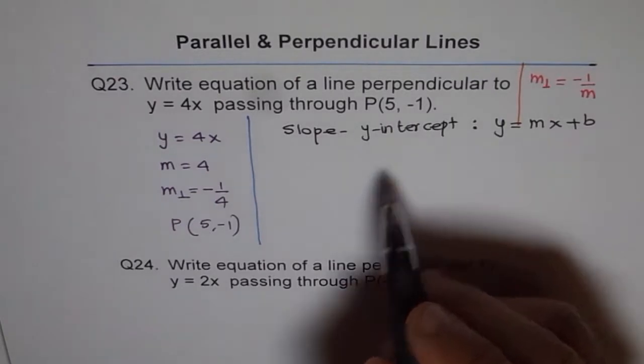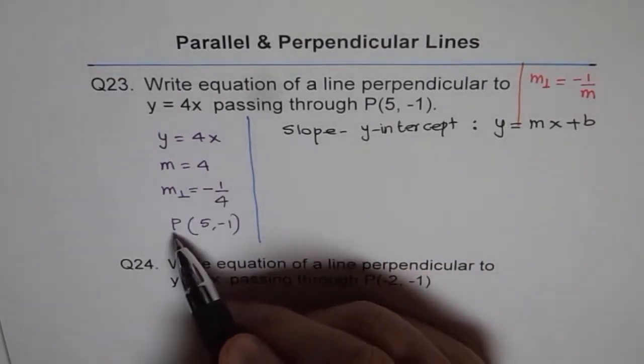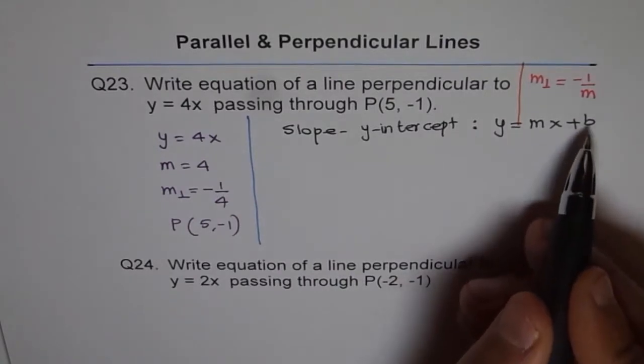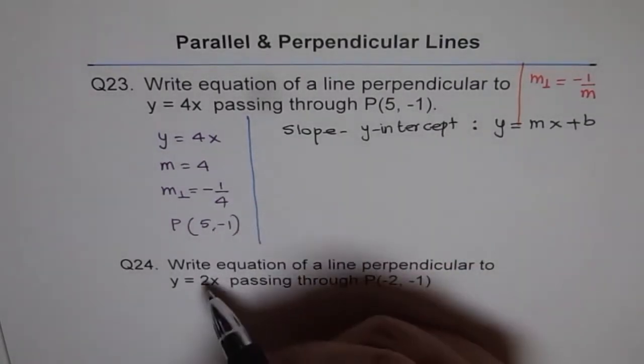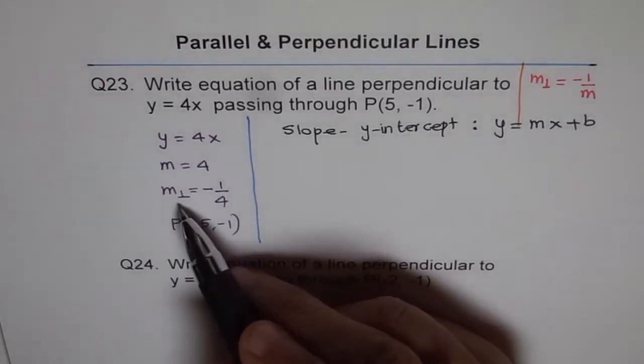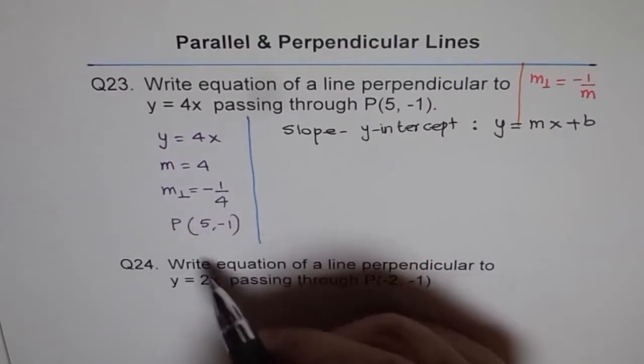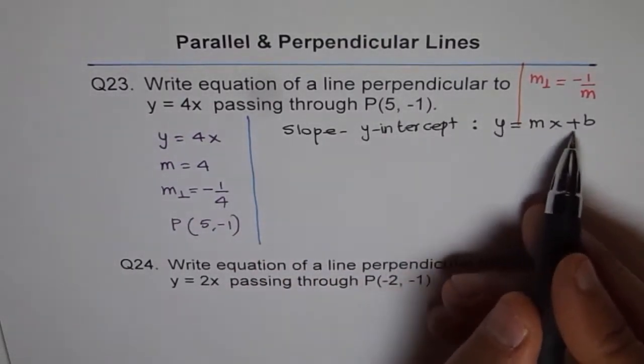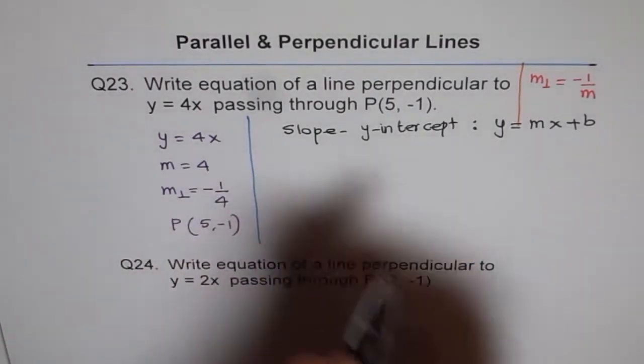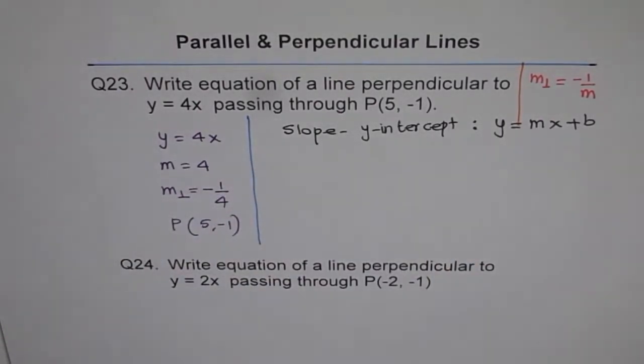Now, we know slope, we know a point, but we do not know y intercept. So the idea is to isolate and find what b is from given information. Given information is the point and the information we found, that is, perpendicular line slope should be minus 1 over 4. So we will rewrite this equation and substitute these values.